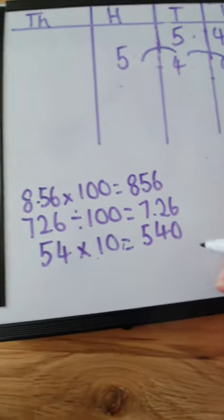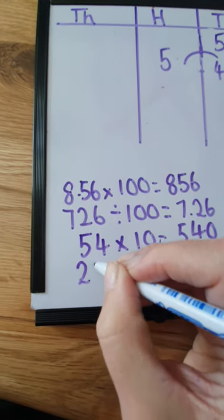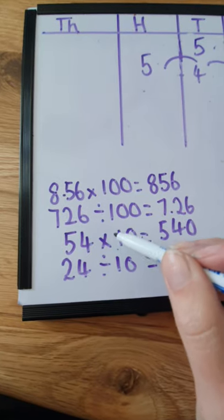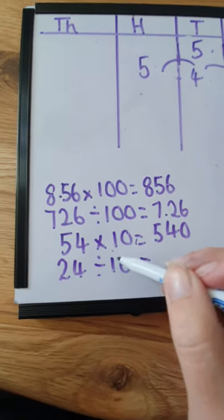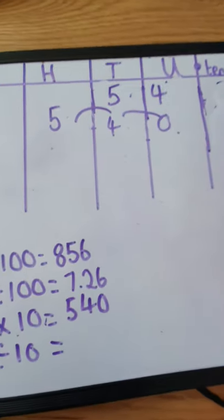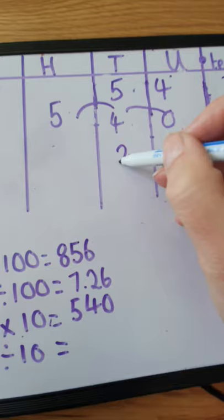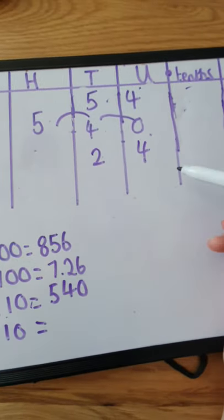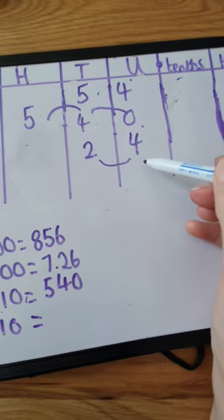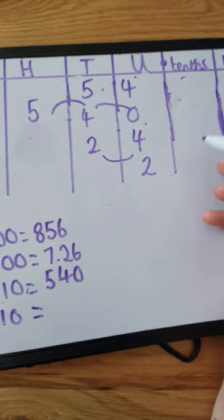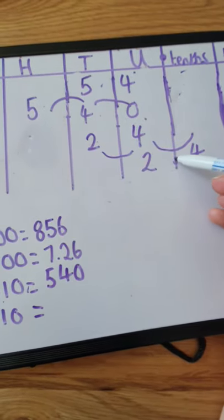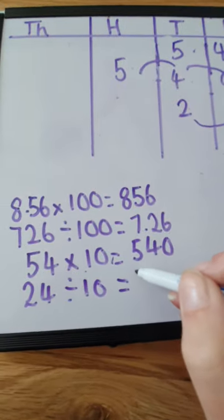Let's look at dividing by 10. Let's say we have 24 divided by 10. Since times-ing by 10 moves up one column, dividing by 10 goes down in value by one place — moving to the right. Put 24 in the place value chart. Our 20 is going to go into 2 units, and our 4 is going to go down in value into tenths. So 24 divided by 10 gives us 2.4.